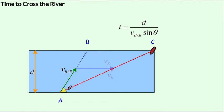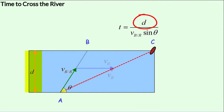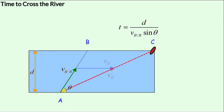It is natural to ask: how do I get to the other side in the shortest time? Looking at the formula, we cannot change d. We are also not changing the velocity of the boat with respect to the river — think of it as a motorboat with a single fixed speed. The only parameter we can change is the angle θ. To minimize time, we need sinθ to reach its maximum value of 1, which happens when θ equals 90°.